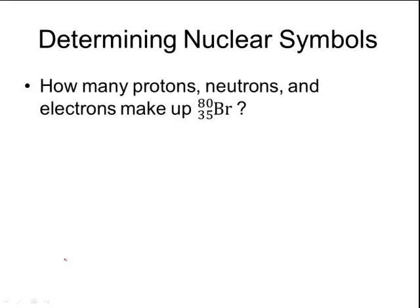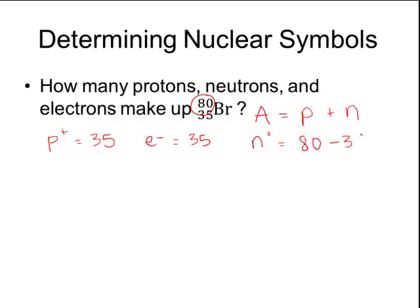Here are examples of how to determine nuclear symbols. How many protons, neutrons, and electrons make up a bromine-80 isotope? The top number, 80, represents the mass number, and the bottom number, 35, represents the number of protons. So the number of protons is 35. Because this is a neutral atom, the number of electrons is also 35. Since the mass number equals protons plus neutrons, neutrons = 80 − 35 = 45 neutrons.